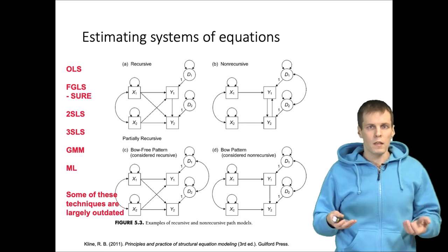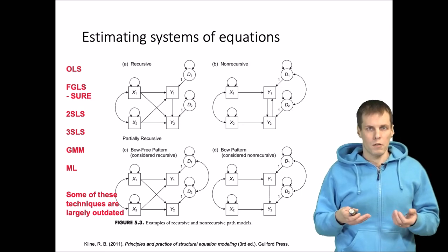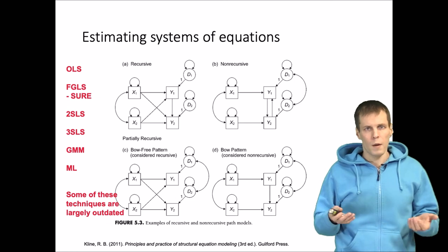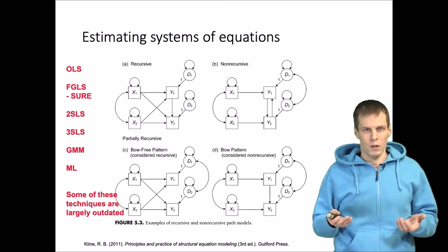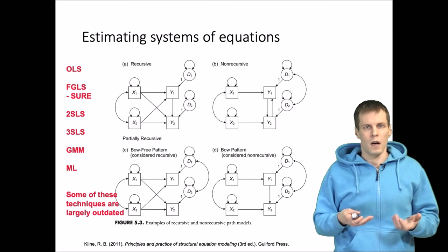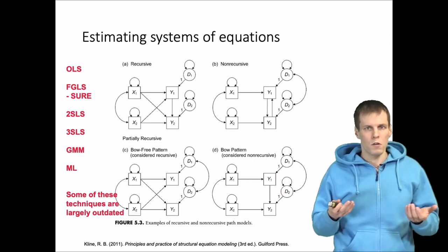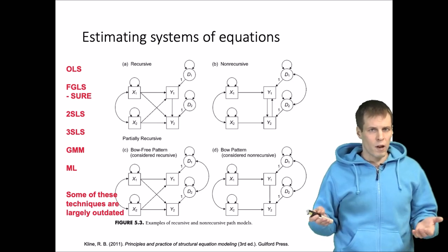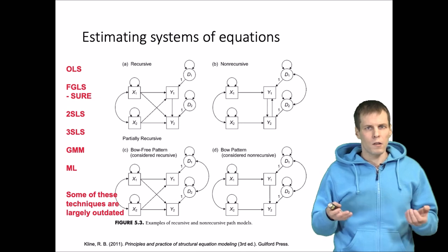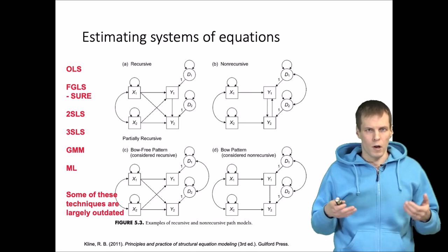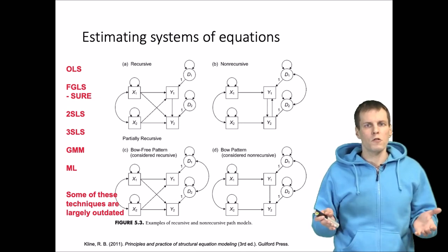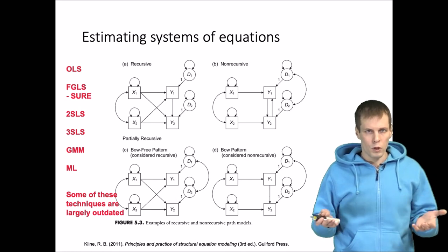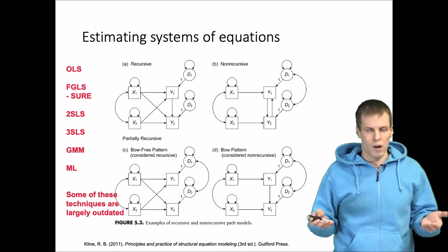Until recently, some of these computational problems took so long that doing maximum likelihood estimation was not practical. But nowadays, ML estimation of these models converges in a fraction of seconds, so it's not really a relevant concern anymore. That is another reason why some of these techniques are obsolete. They were initially introduced because, for example, ML wasn't computationally feasible, and we did a simpler approximation.